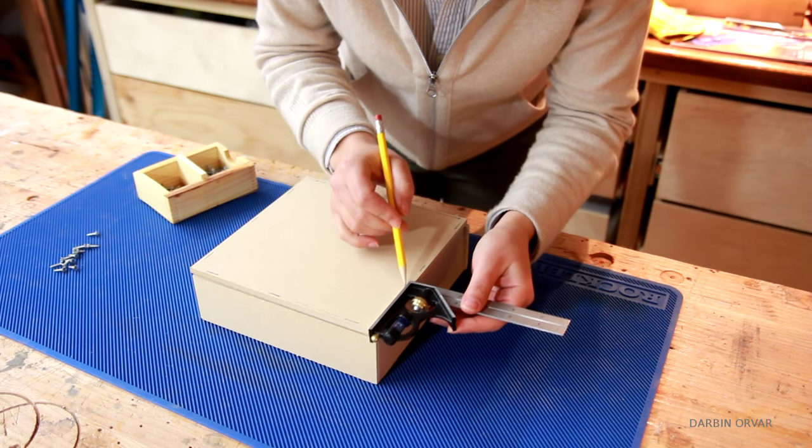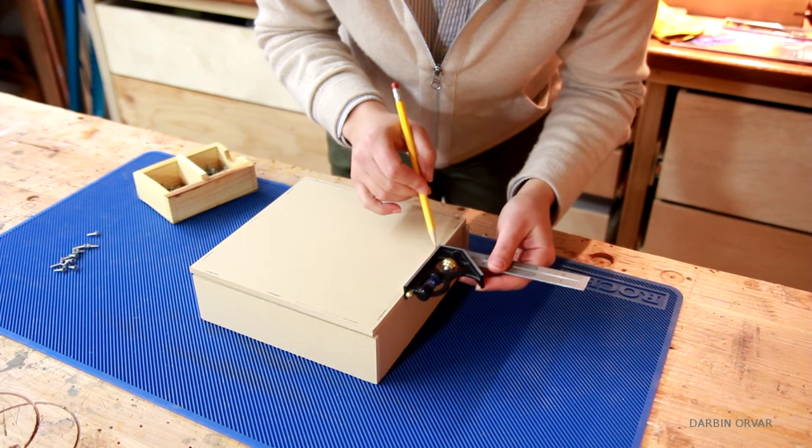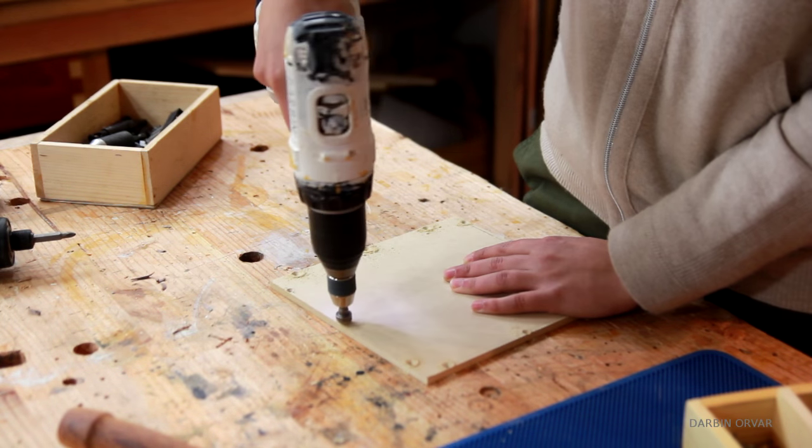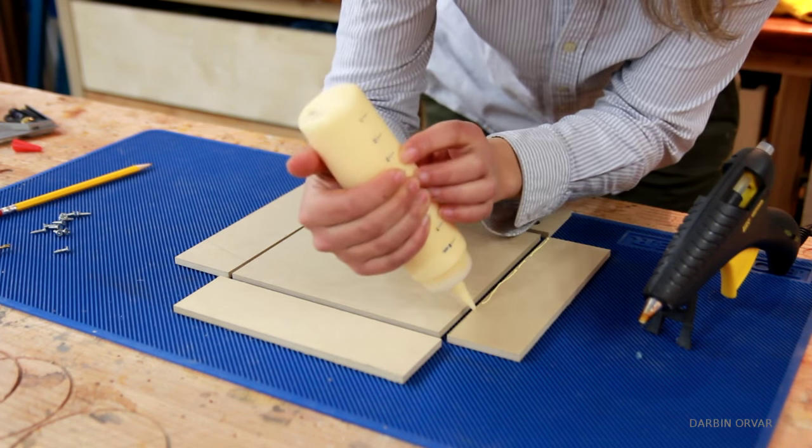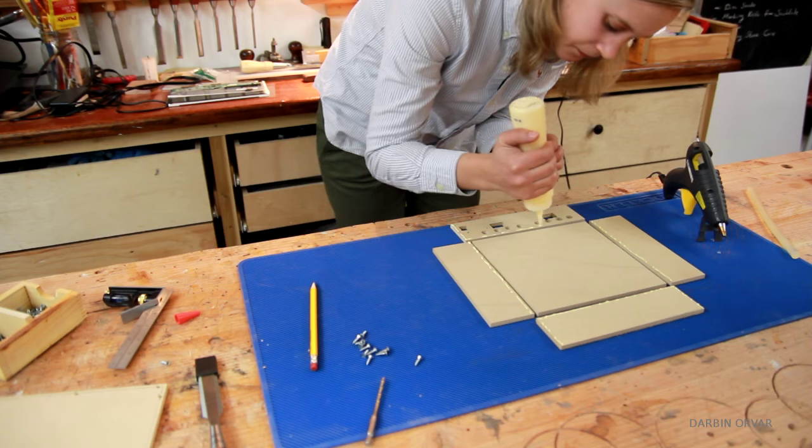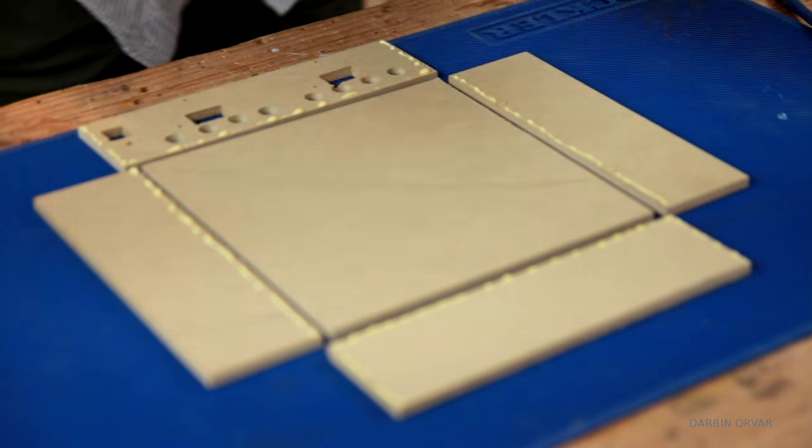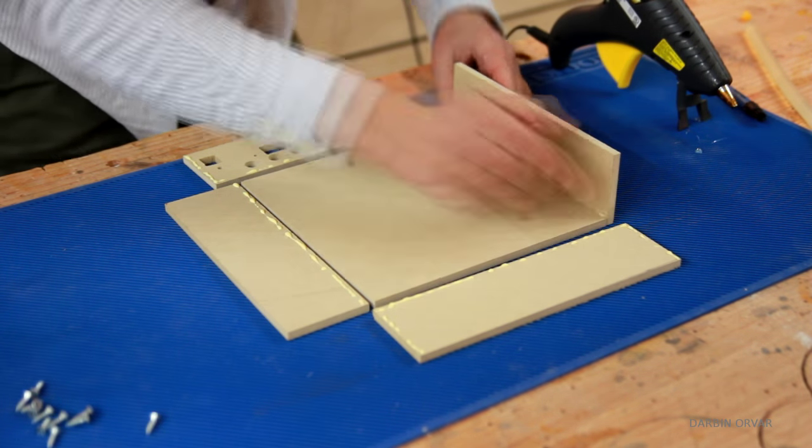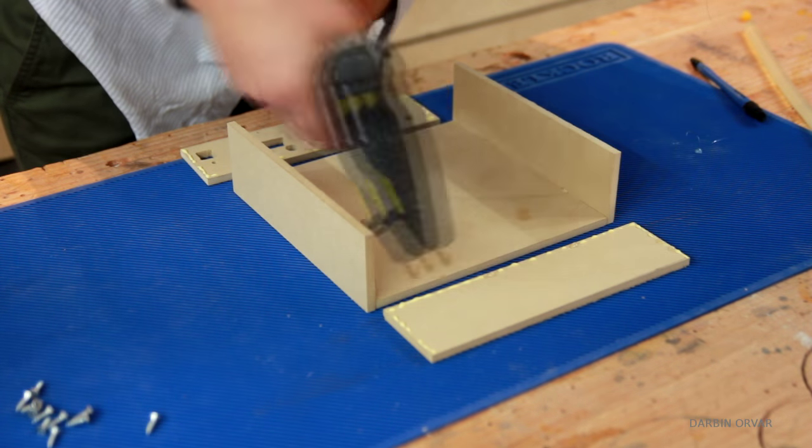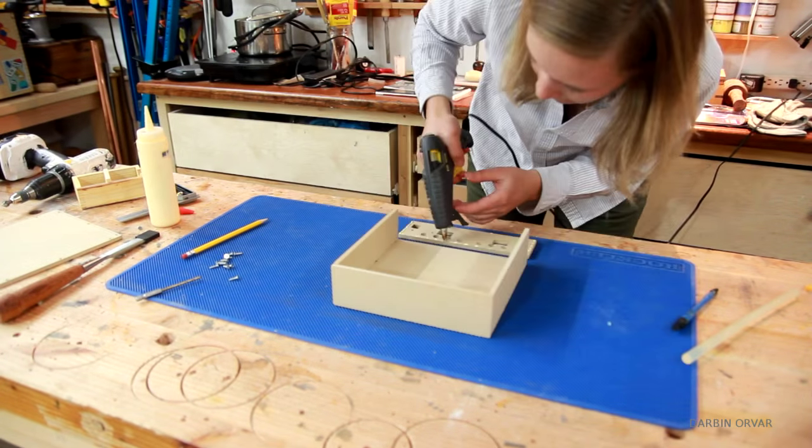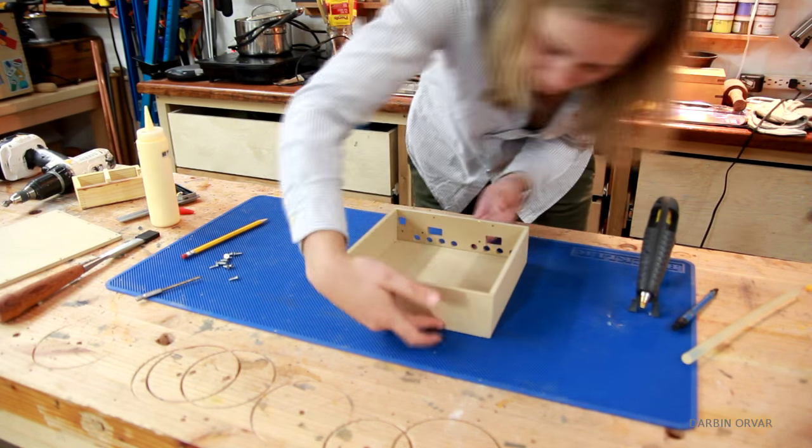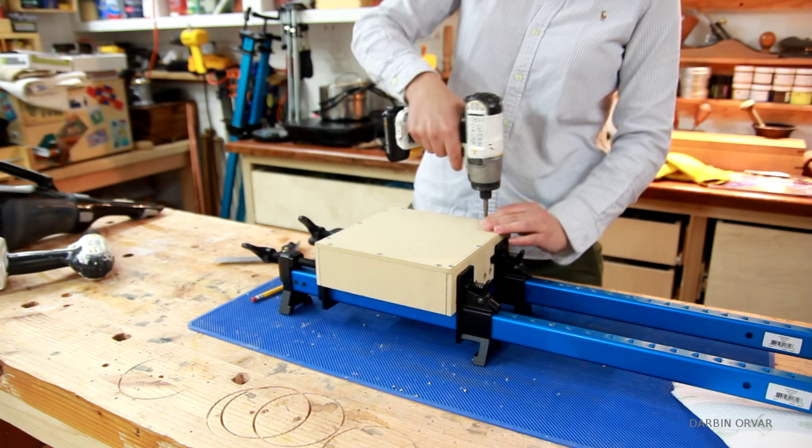So measuring out one-eighth of an inch around the top, where I'm going to drill holes to screw it in. Doing some countersinking here. Now to put the box together, I'm starting with yellow glue around the edges. Then I'm adding small amounts of hot glue on one piece at a time, because it stiffens up so quickly. And this basically acts as a clamp while the yellow glue dries. It works really well.